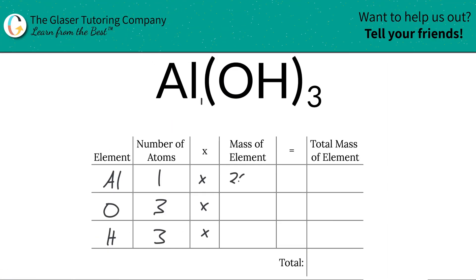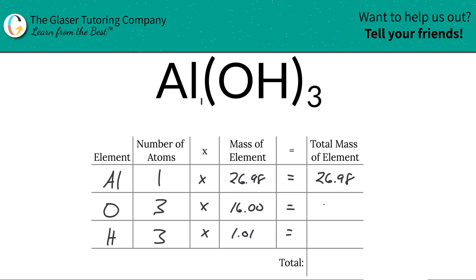Aluminum is 26.98, oxygen is about 16, and hydrogen is about 1.01. To find the total mass of each element in the compound, we simply multiply across each row. For aluminum it's just 26.98, for oxygen it's 48, and for hydrogen it's about 3.03.